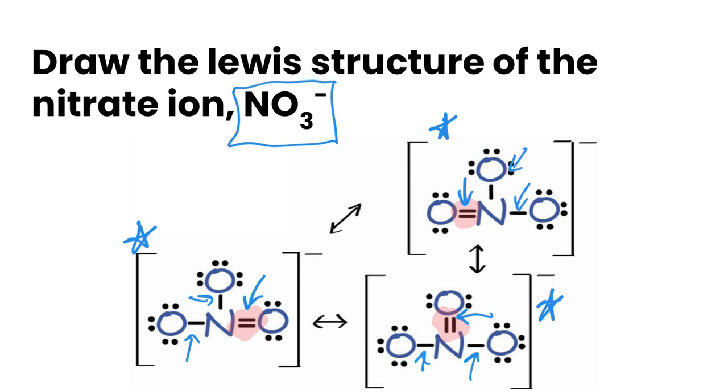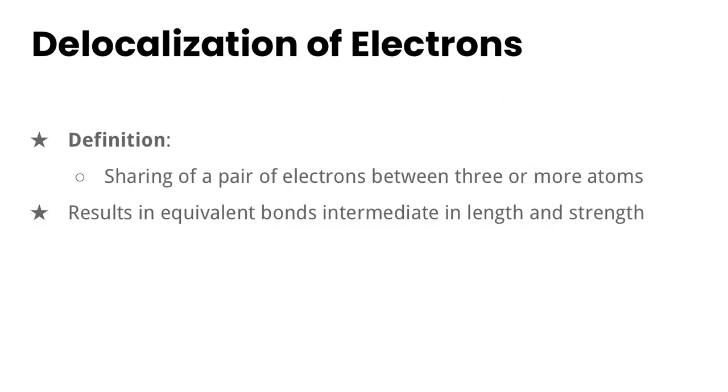However with resonance structures like this we have something called delocalization of electrons and it is defined as the sharing of a pair of electrons between three or more atoms and it results in equivalent bonds that are intermediate in length and strength.